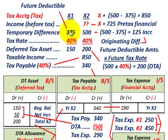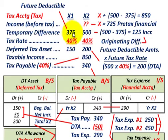We're going to be paying taxes on it now, but in later years it's going to reverse itself and we're not really going to have to pay taxes on it because we prepaid them in year X1.